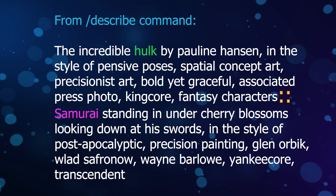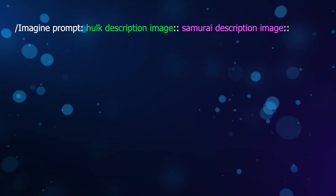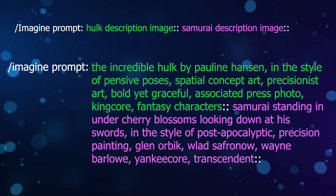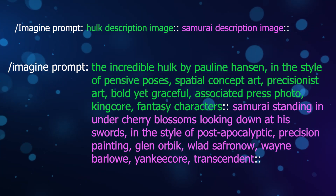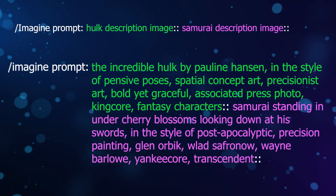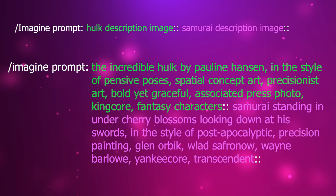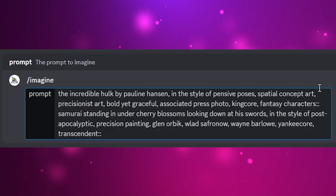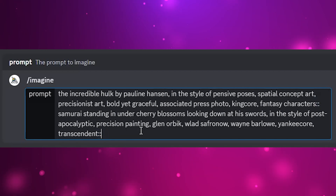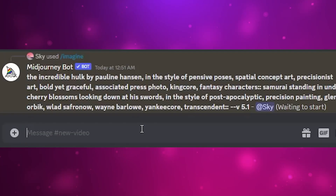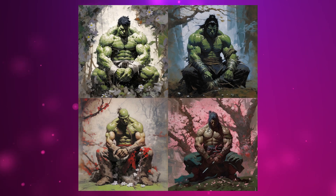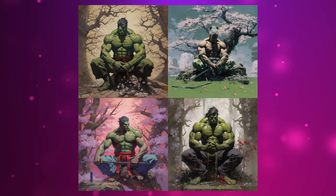We will combine the descriptions of our Hulk and samurai image to mix or blend them using multi-prompting. It's important to include the double colons to separate the two descriptions. Now all we have to do is hit enter and wait for Midjourney to do its magic. The results are incredible — no pun intended.